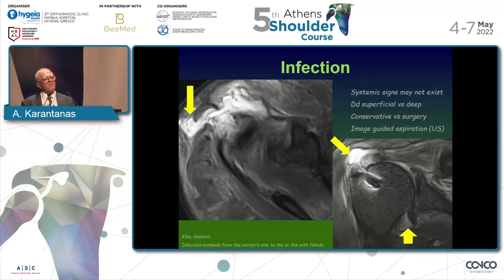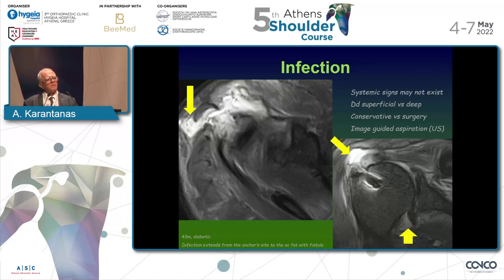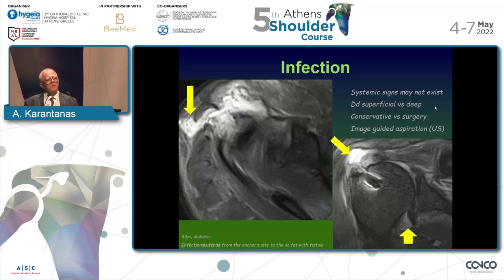Infection is very rare. The most important task for radiologists is to aspirate the joint under ultrasound guidance to isolate any microorganisms, with a high level of suspicion since systemic signs are generally absent. The role of radiologists is to differentiate superficial from deep anatomical involvement — superficial infections can be treated conservatively, while deep infections require surgery. Here we see abscess formation extending into the deltoid muscle with fistula to the subcutaneous tissue, which was treated conservatively.